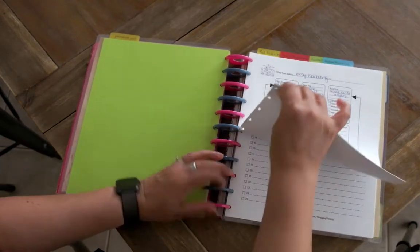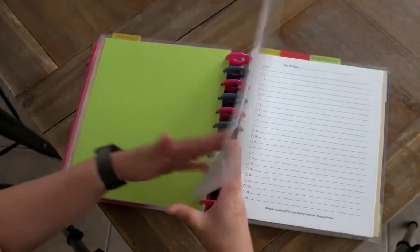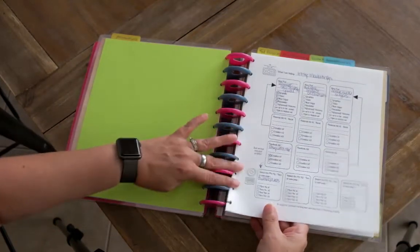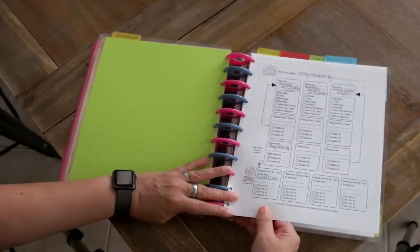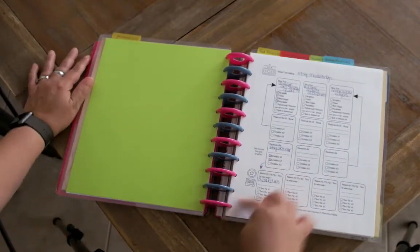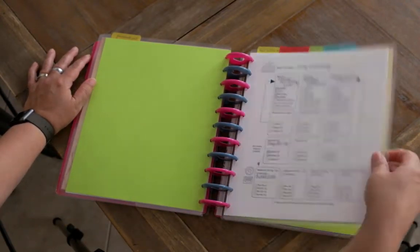And you think oh gosh that's gonna be hard to get back on, but you literally just do this and with the arc planner those just go right back in. You use the hole puncher to do that.